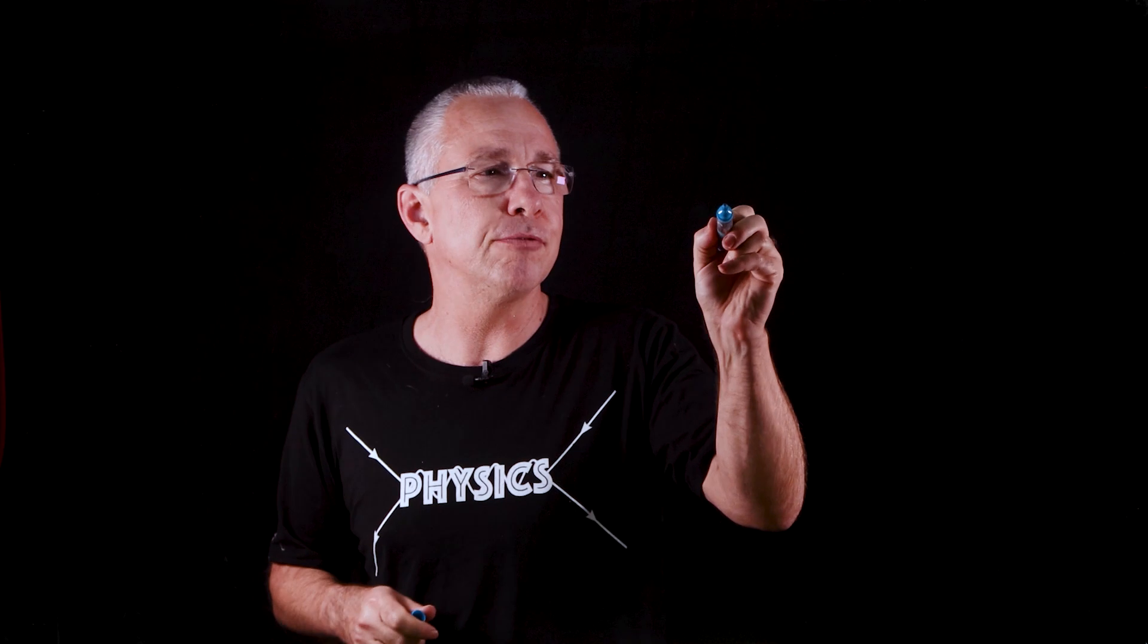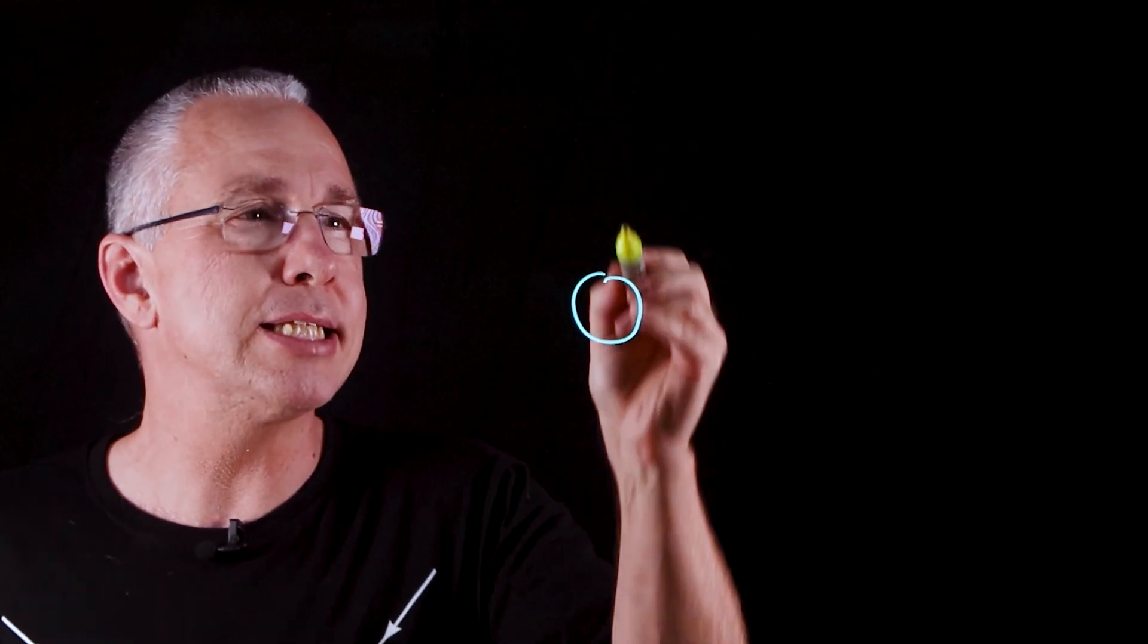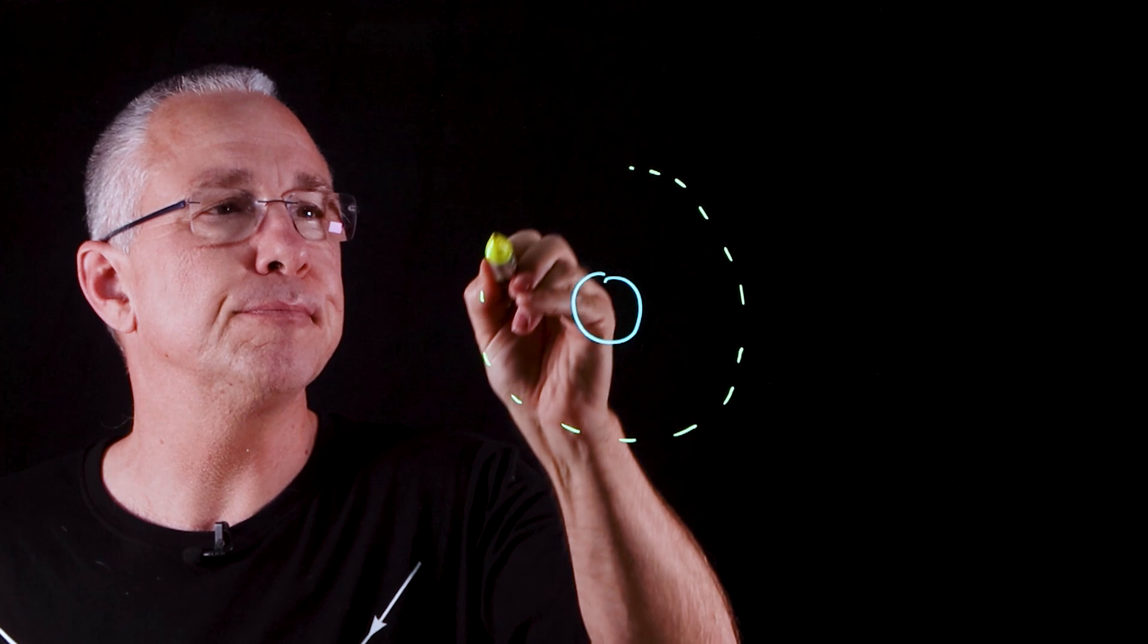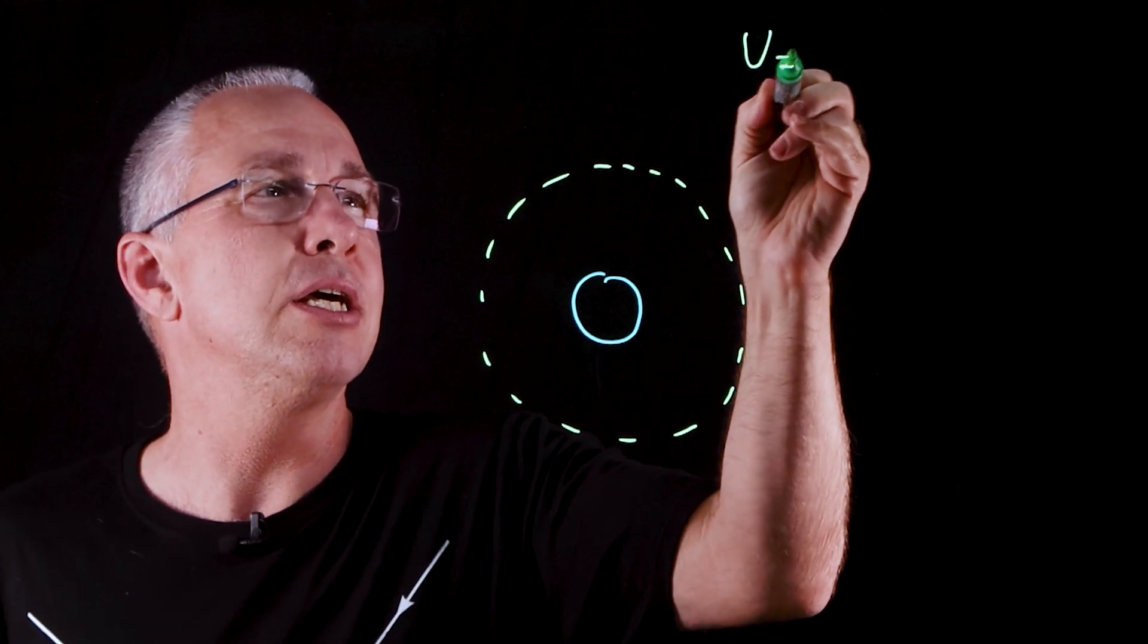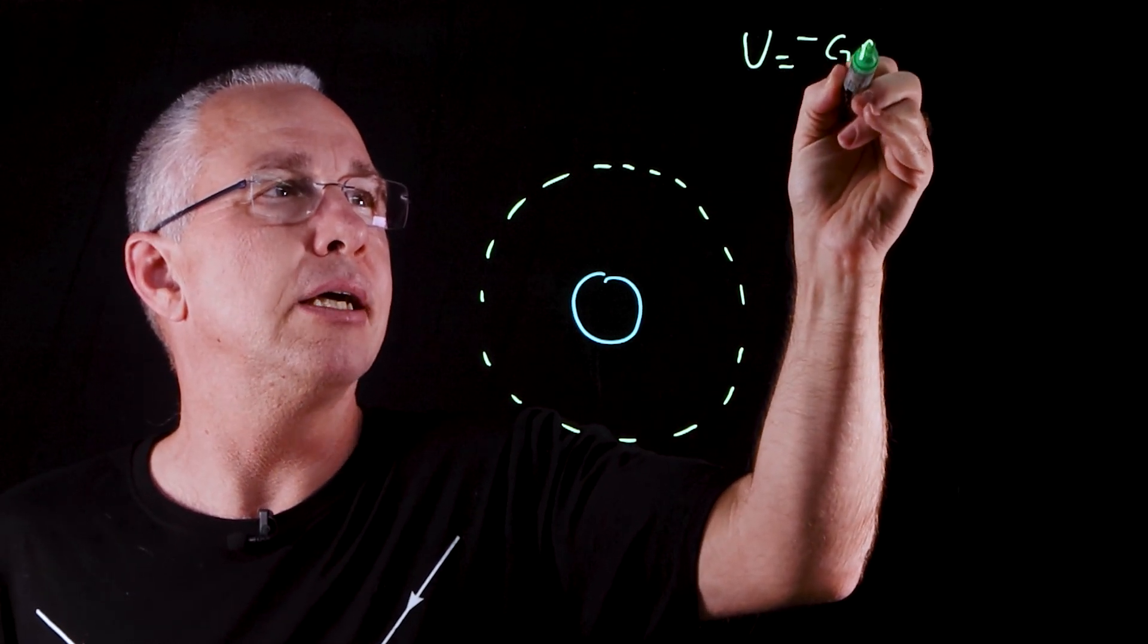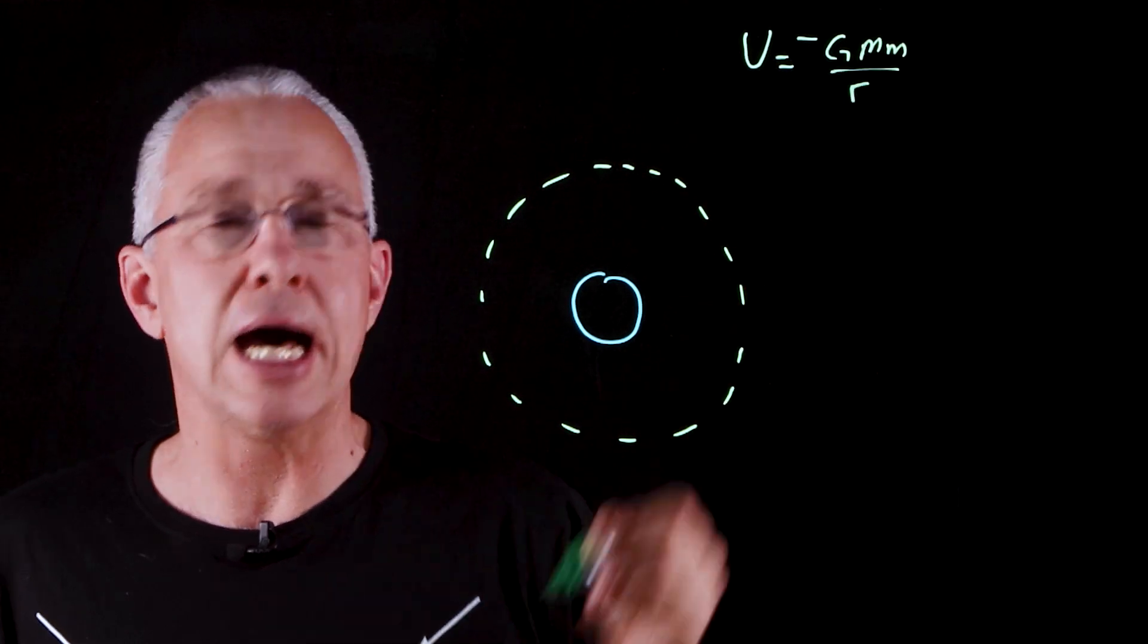Now let's start off with our Earth, and we will put a satellite into orbit like so. Now what types of energy does it possess? Well, the first type of energy it possesses is of course the gravitational potential energy, which is the value of negative G m over r.